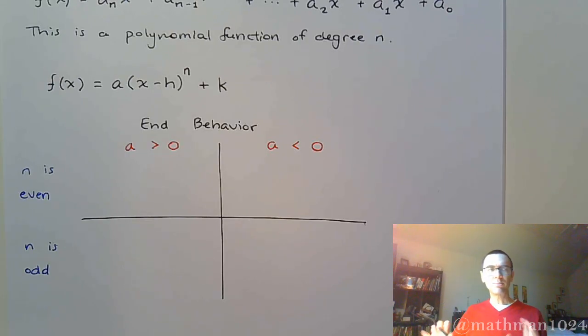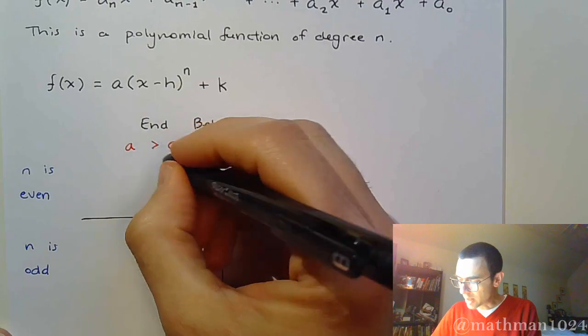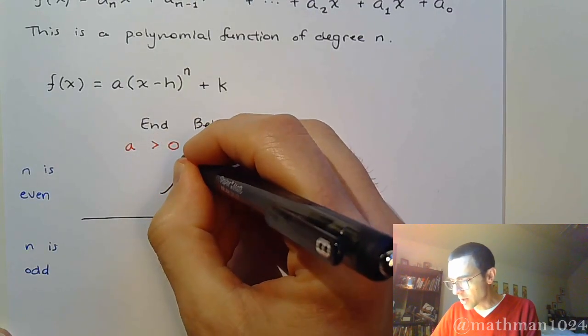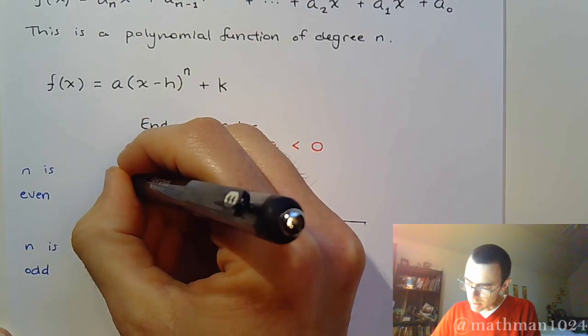So pretty simply, we compare these guys to what we know. So when n is even, I want you to be thinking about your even degree function. Your main one is the quadratic function, so we know that its shape, when you have a positive lead coefficient, he goes up on the right, and he goes up on the left.